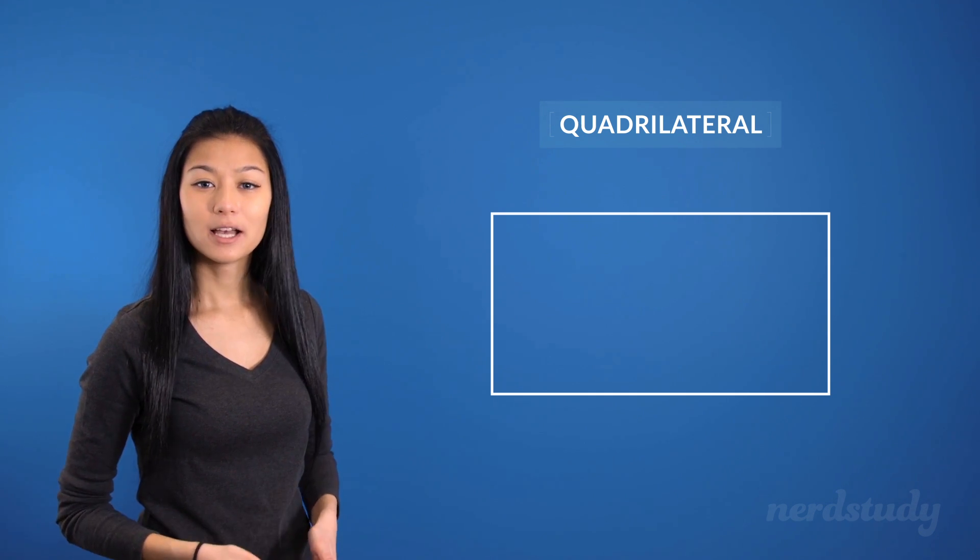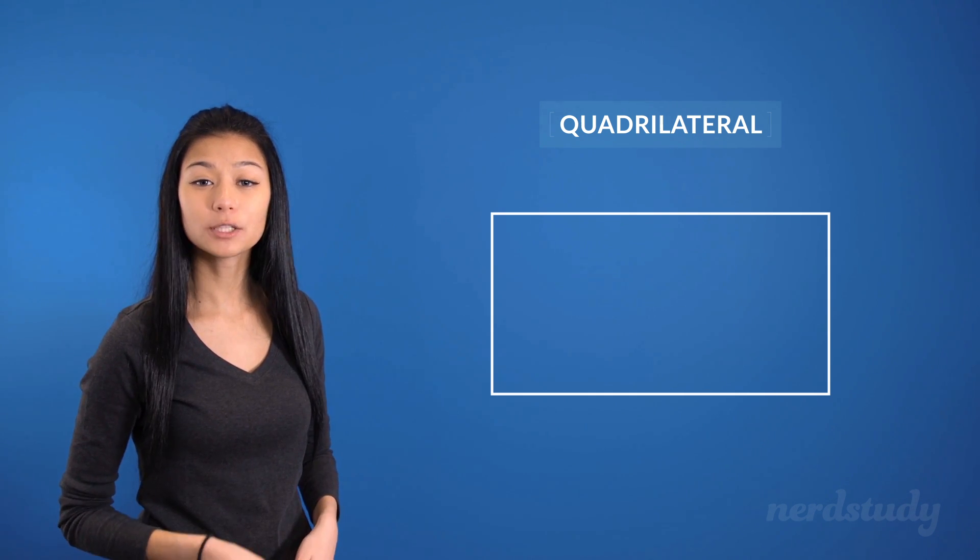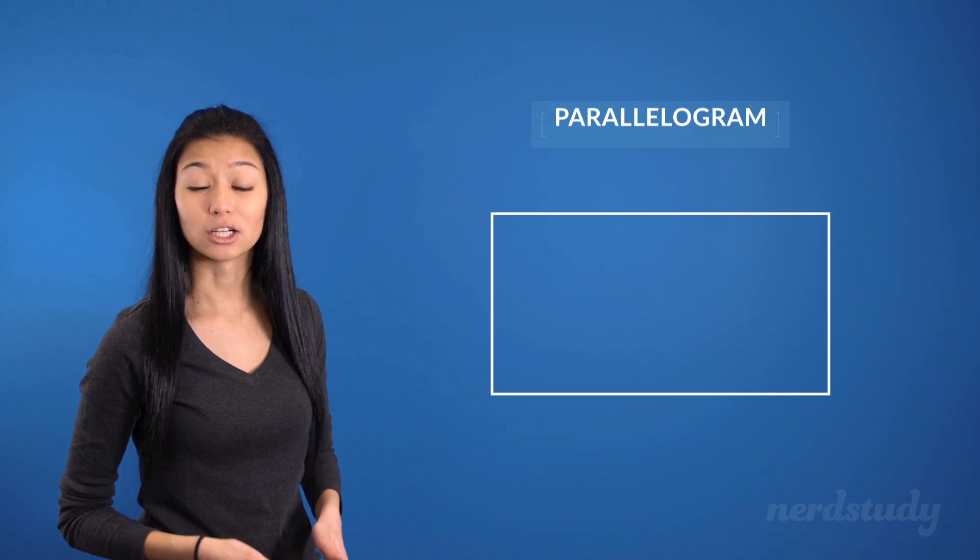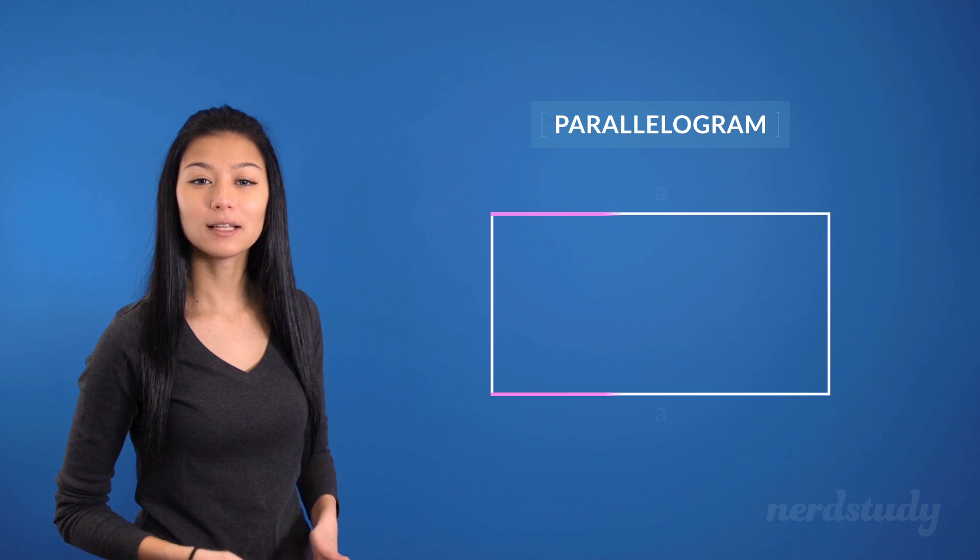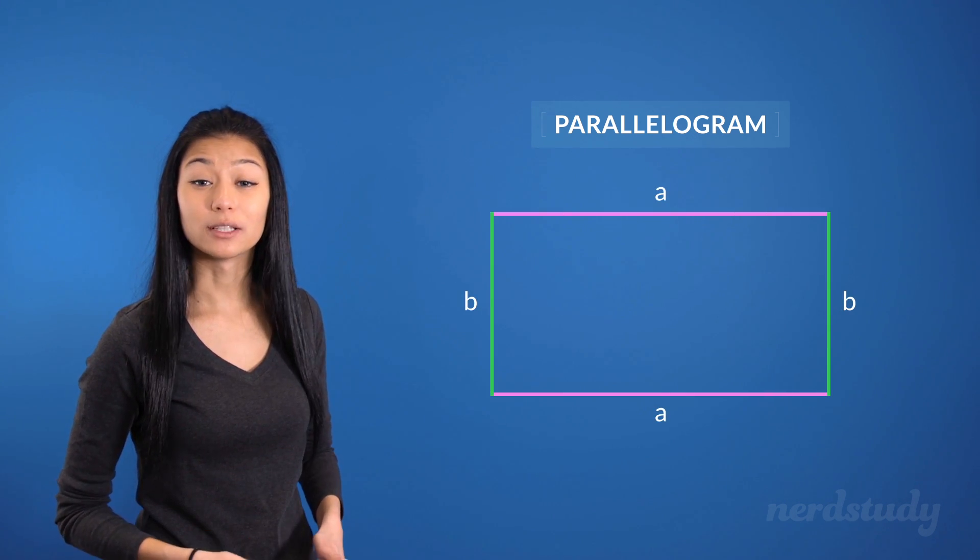Now, interestingly enough, some quadrilaterals can be more specifically referred to as parallelograms. A parallelogram is a quadrilateral that has parallel opposite sides, which are equal in length.